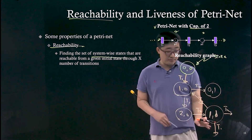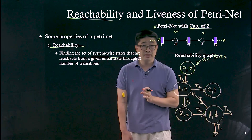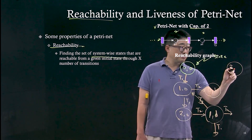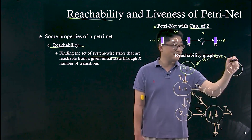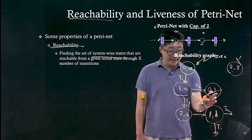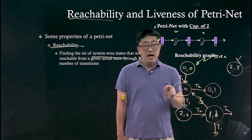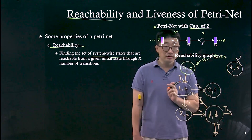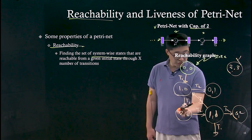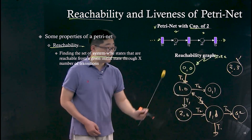We do all these expansions. Is it possible to reach state 3,3? No — that is not a reachable state. However, are we able to reach 0,1? Yes — it takes two transitions. Are we able to reach 1,1? Are we able to reach 0,2? Yes — one transition each. This is the reachability analysis and this is the reachability graph.